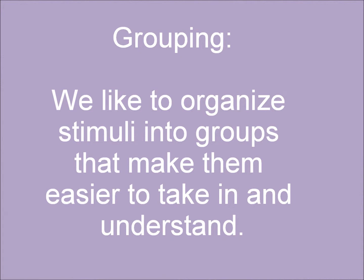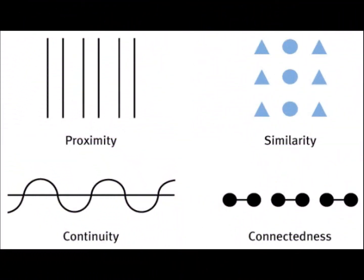Next, we'll get into grouping. Grouping is how we organize stimuli into meaningful groups. There are five major ways to group things together. Four of them are shown here. We have proximity, similarity, continuity, connectedness, and closure, which is one of the ones not shown here.